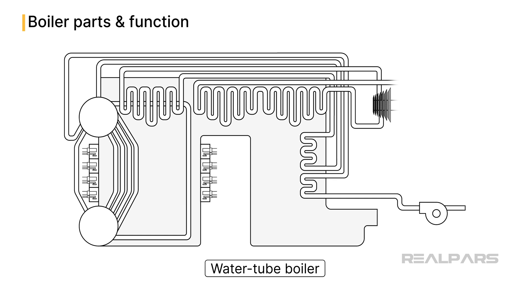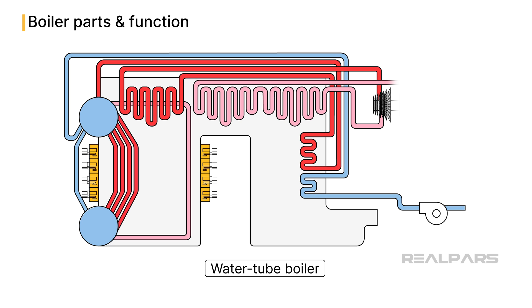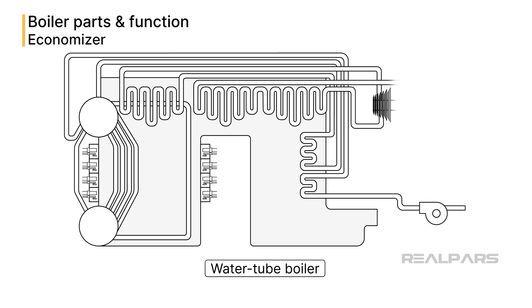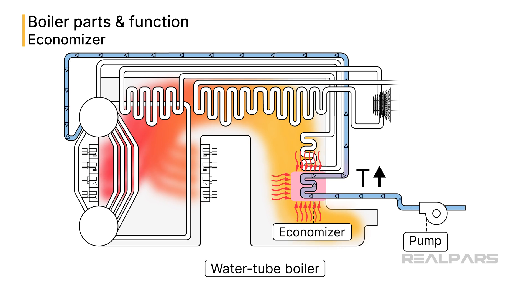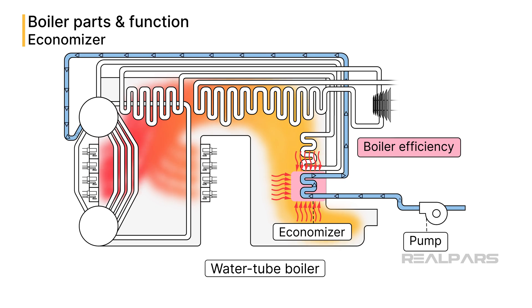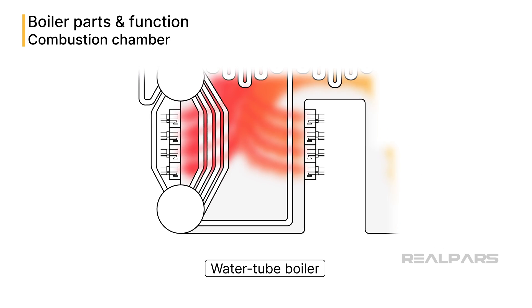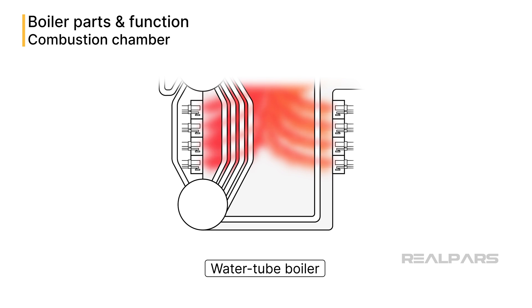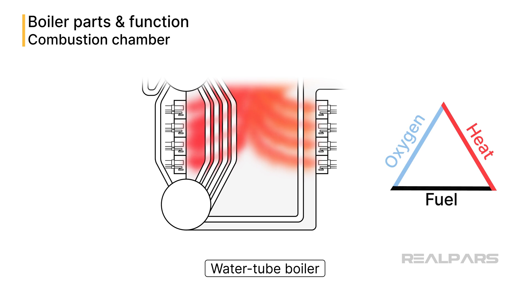To understand the way an industrial boiler works, we should look at the main components that start the whole process and keep the operation efficient. The first component that feed water passes through is the economizer. The economizer preheats the feed water supplied by the feed water pump by absorbing energy from the combustion gases, which raises the temperature of the fluid. This process boosts boiler efficiency by recovering heat that would otherwise be lost. Corrosion caused by low water temperature can also be prevented by controlling the incoming feed water.